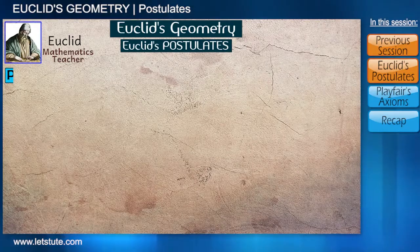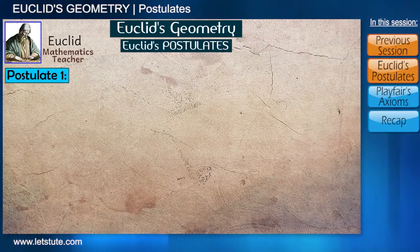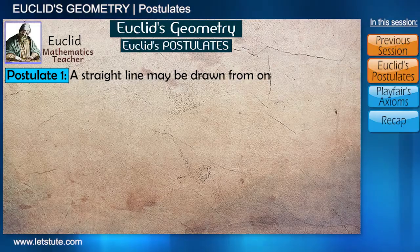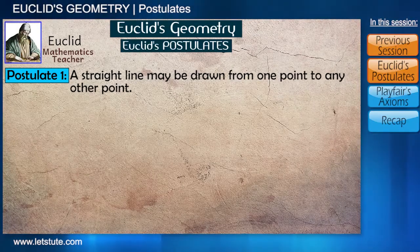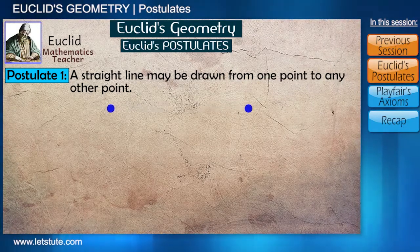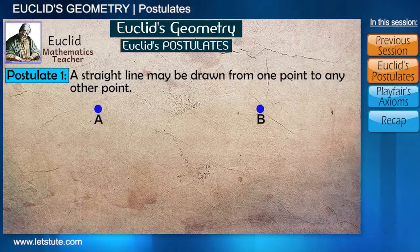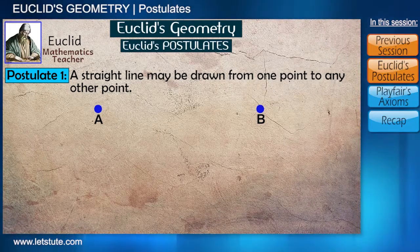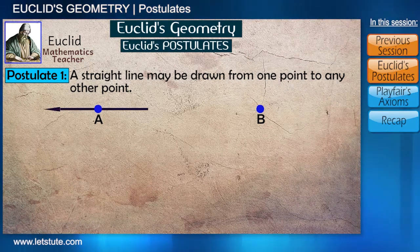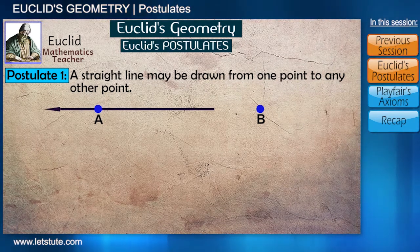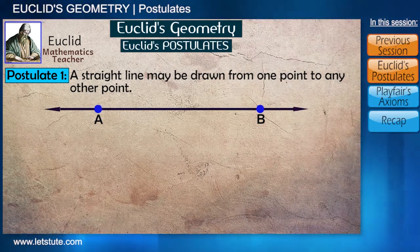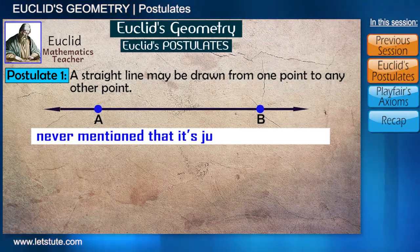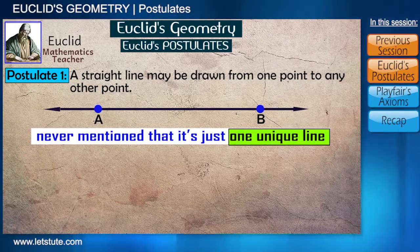Let's have a look at Euclid's first postulate: a straight line may be drawn from one point to any other point. Let's take two points A and B. What he was trying to say is that there can be one straight line that will pass through these two points. But here, he just assumed and never mentioned that it's just one unique line.